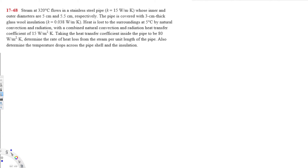Let's do this problem. The question is asking: steam at 320 degrees Celsius flows in a stainless steel pipe whose inner and outer diameters are 5 centimeter and 5.5 centimeter respectively. The pipe is covered with 3 centimeter thick glass wool insulation. Heat is lost to the surroundings at 5 degrees Celsius by natural convection and radiation with a combined heat transfer coefficient of 15 watts per meter square Kelvin. The inside heat transfer coefficient is 80 watts per meter square Kelvin. Determine the rate of heat loss and the temperature drops across the pipe shell and the insulation.